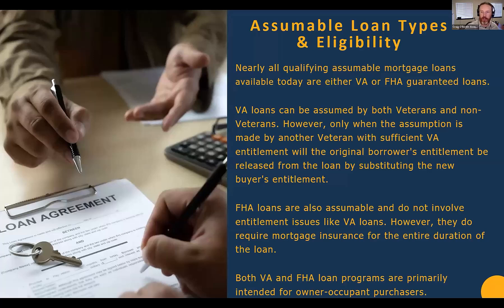What type of loans are assumable and who's eligible? Basically all VA and FHA guaranteed loans are assumable. VA loans are assumable by both veterans and non-veterans alike. It is a surprise to a lot of people that you do not have to be a veteran to assume a VA loan.